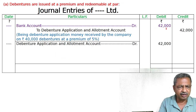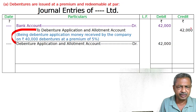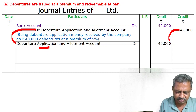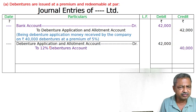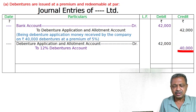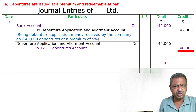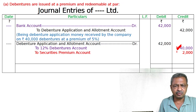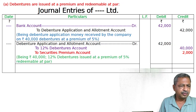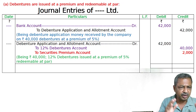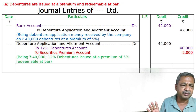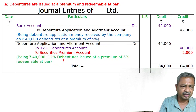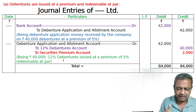Then Debenture Application and Allotment Account debited — jitna credit utna debit — taaki wo cancel ho jaye. To 12% Debentures Account 40,000 par value, and to Securities Premium Account 2,000 — 5% of 40,000. Narration: being Rs. 40,000 12% debentures issued at a premium of 5% and redeemable at par.